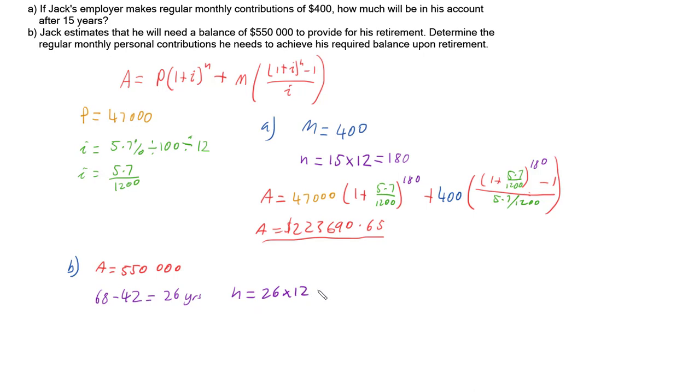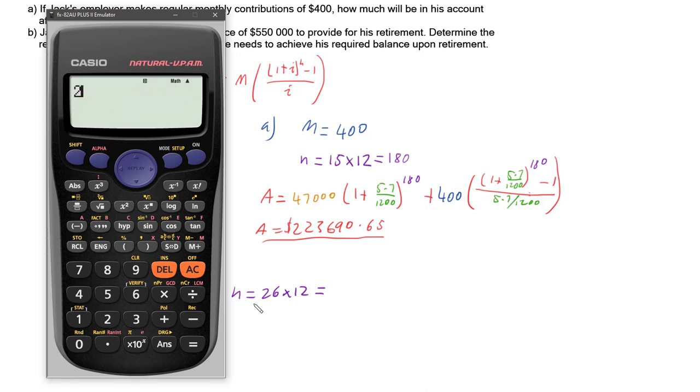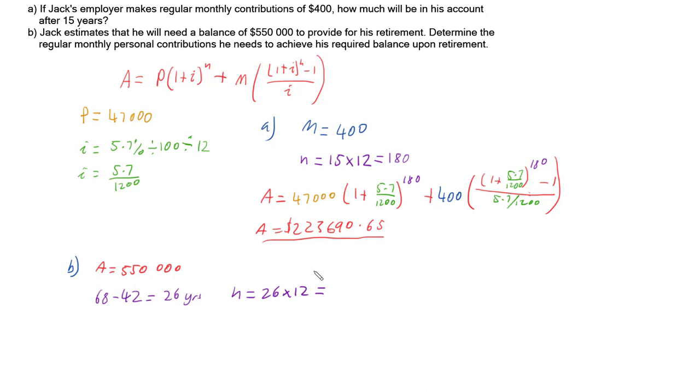So our n is going to be 26 years worth of our periods, which are 12 months a year. And so Jack is planning on retiring in 312 months time. But we don't know M. M is what we're trying to work out, M is unknown.